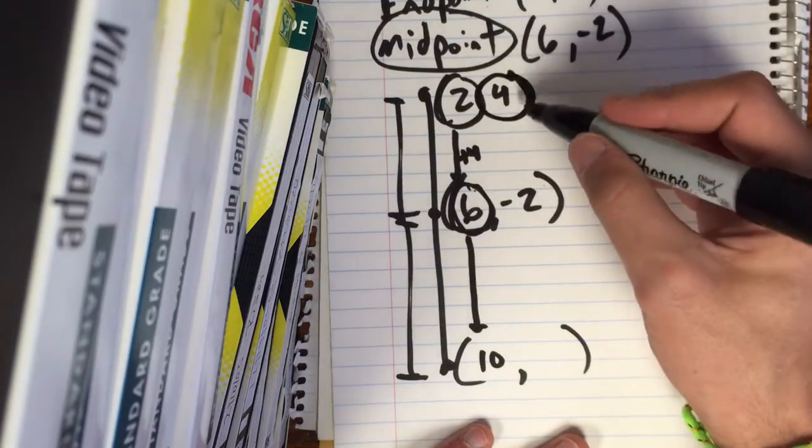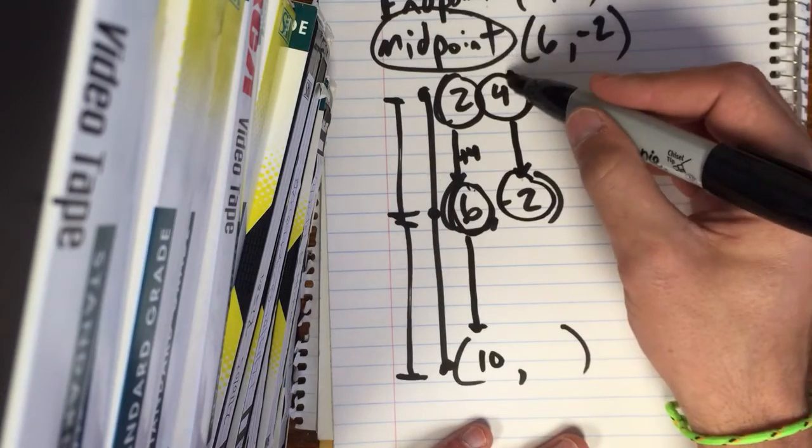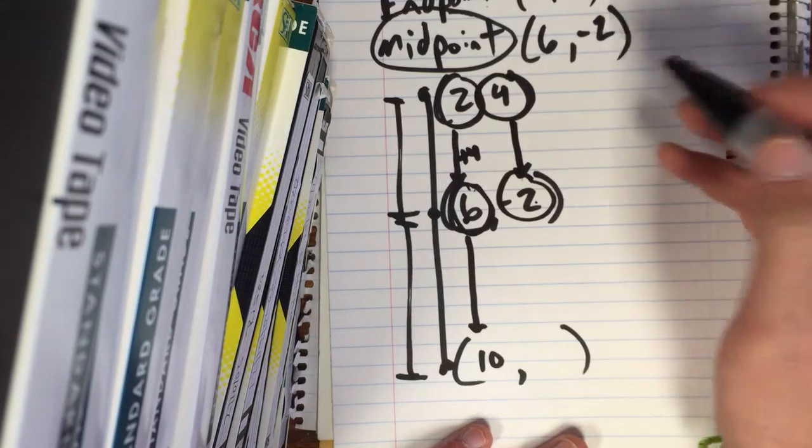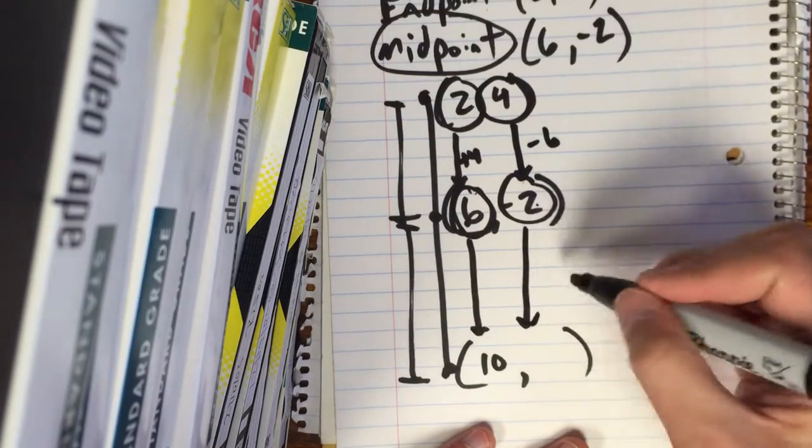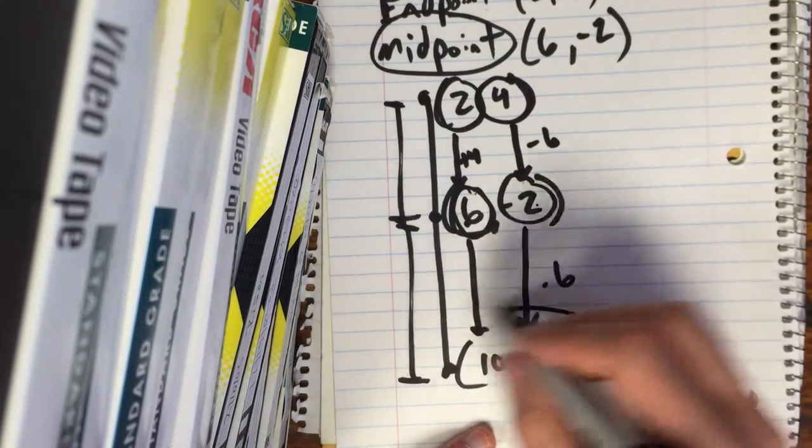Let's do the same thing on this side. Take our y, go down to -2. So this y is 4, this y is -2. What do you do to go from 4 to -2? Subtract 6. It's the exact same thing we're gonna do over here. So -2 minus 6 is -8.